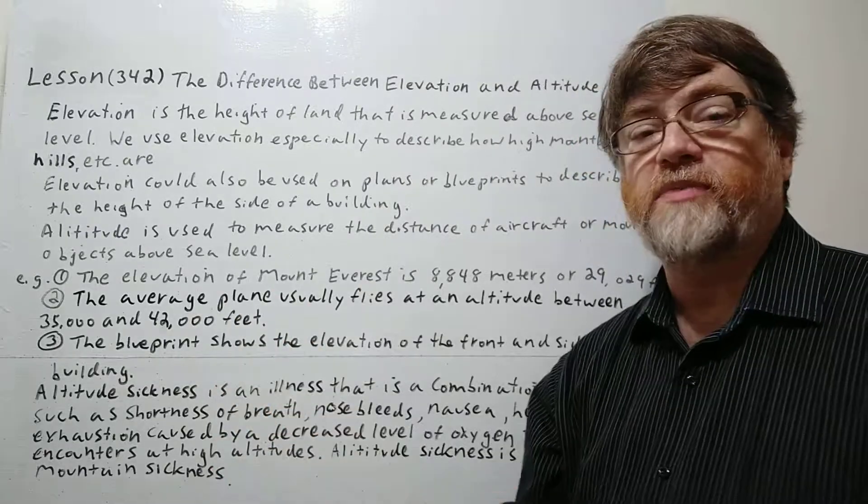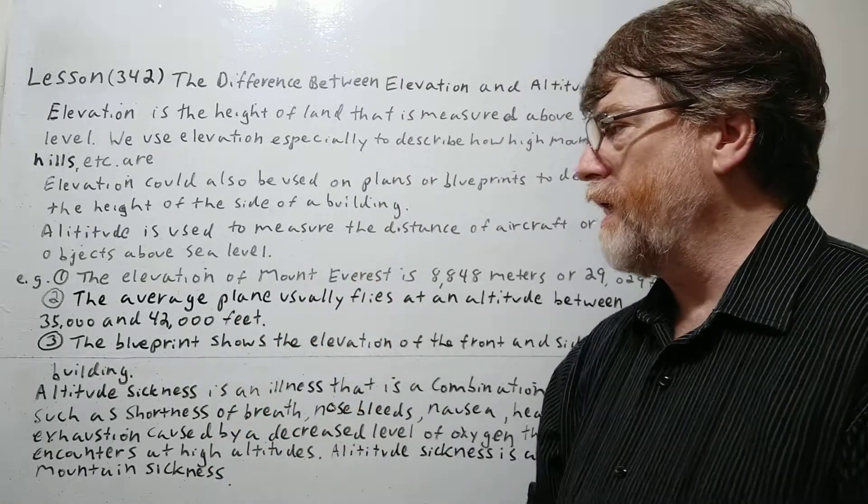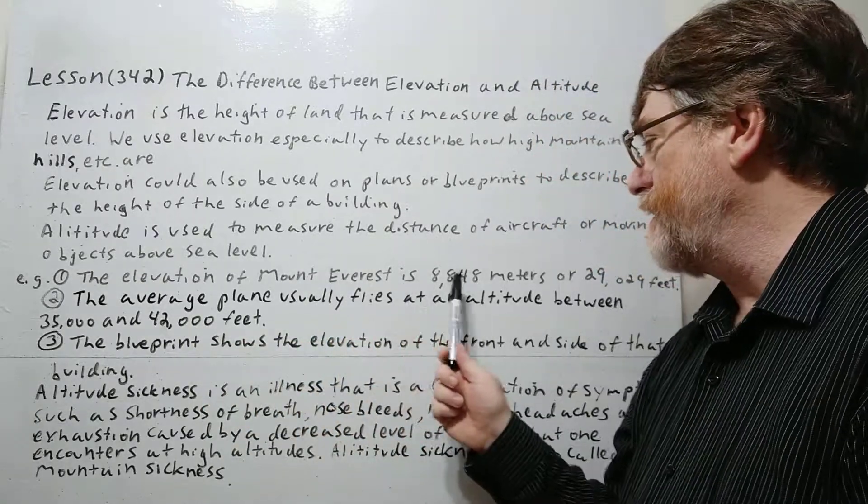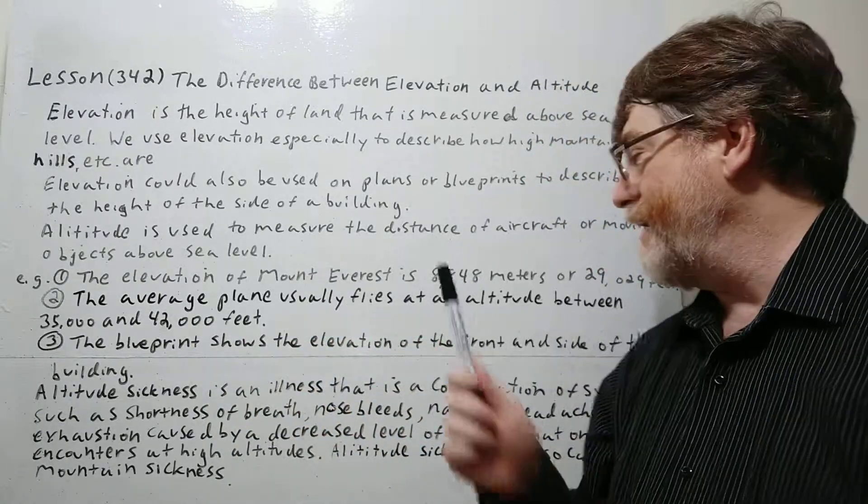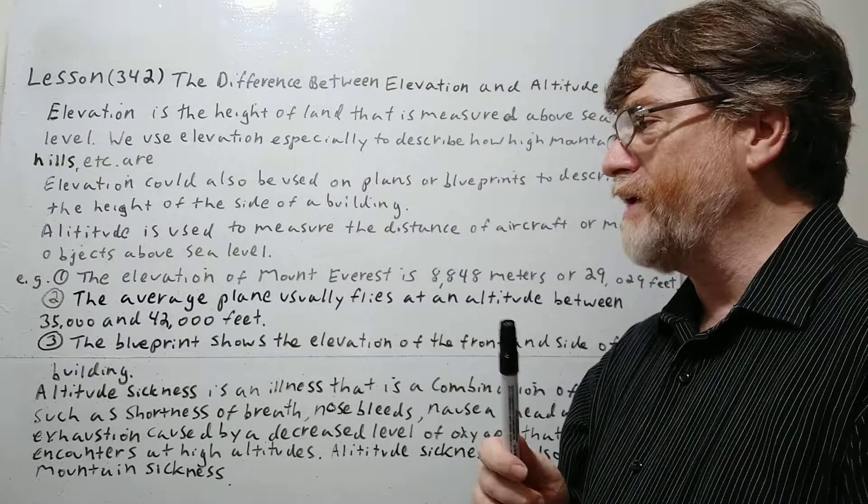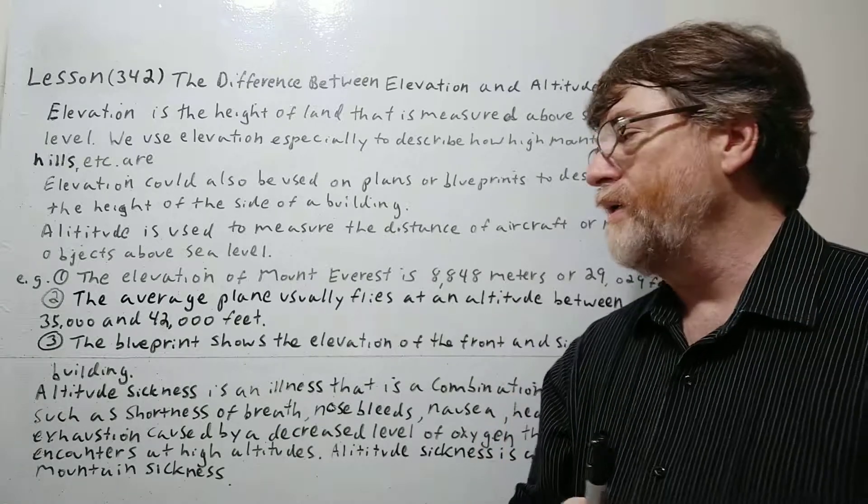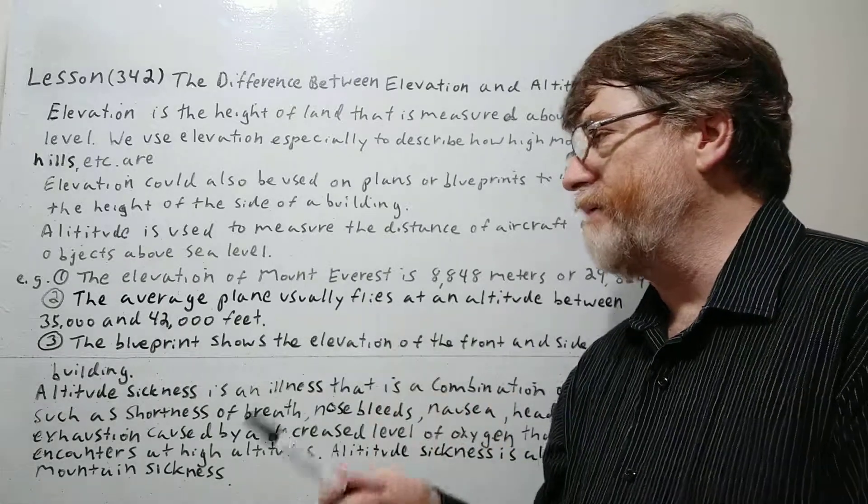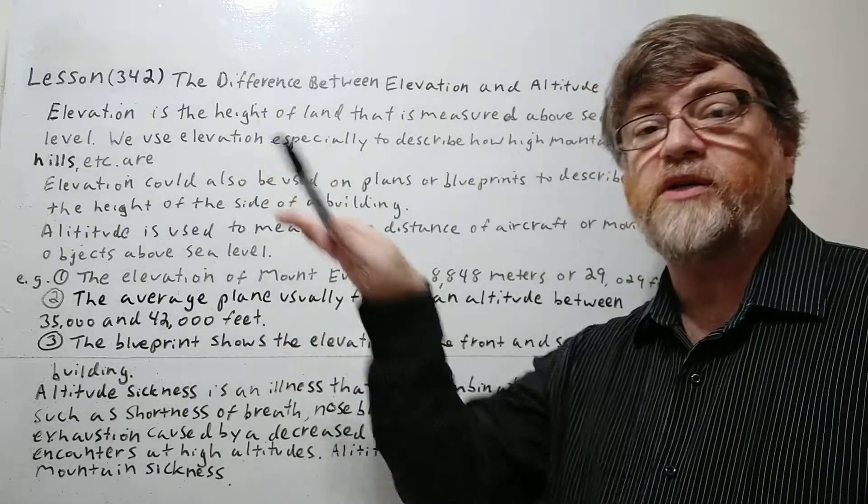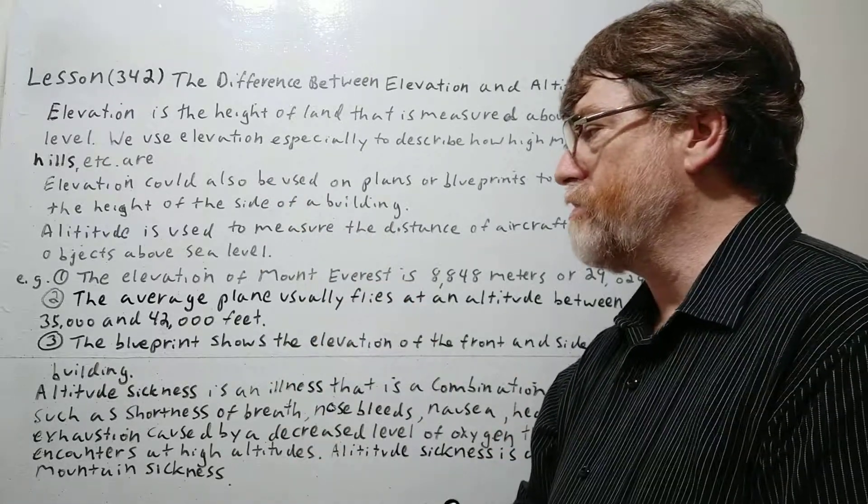Let's look at the several examples here for all the meanings. The first one. The elevation of Mount Everest is 8,848 meters or 29,029 feet. So no, we definitely wouldn't say altitude here. We wouldn't say the altitude of Mount Everest. We have to say the elevation. It is a mountain. It is a hill. It's a measurement of land. Let's look at number two.